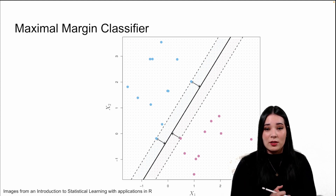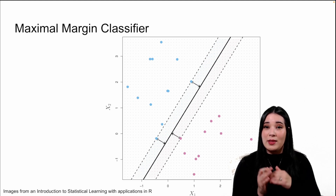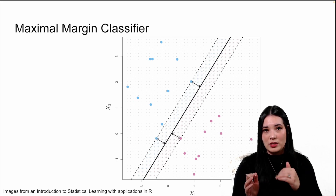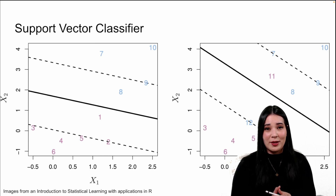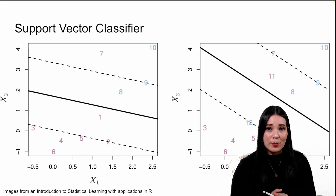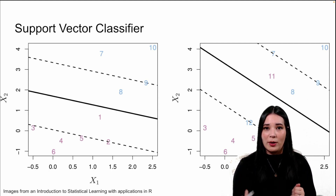In a maximal margin classifier, we choose a hyperplane that perfectly divides between our positive and our negative cases, choosing a hyperplane that maximizes the margin between the closest data points and our hyperplane. However, we also talked about the fact that in real life our groups of data points tend to overlap, so there is no one hyperplane that can perfectly divide our positive cases from our negative cases.